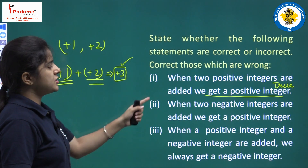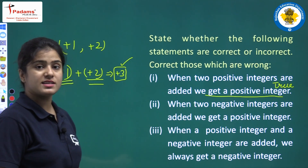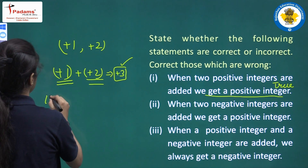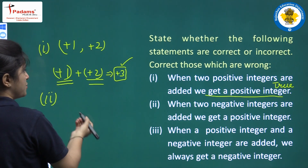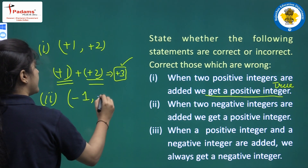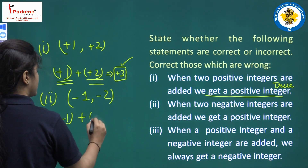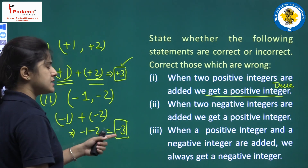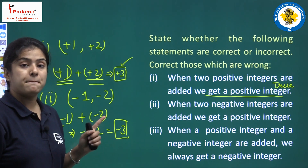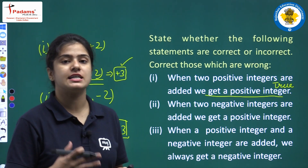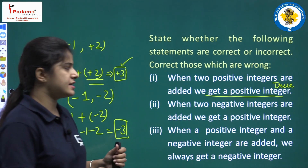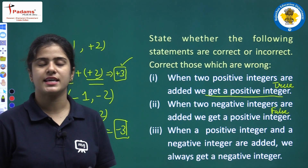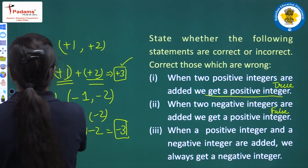Part 2: when two negative integers are added, we get a positive integer. Taking minus 1 and minus 2 — plus minus is minus — so minus 1 minus 2 equals minus 3. Is minus 3 a positive integer? No, minus 3 is a negative integer. So this statement is false. When you add two negative integers, you always get a negative integer.